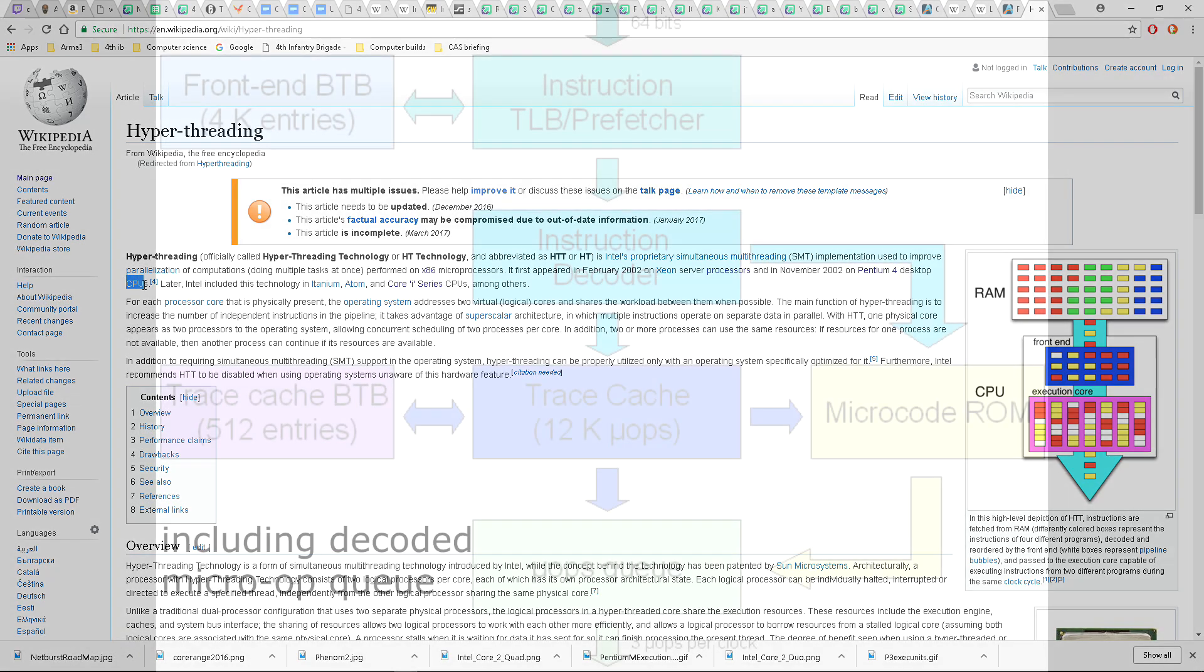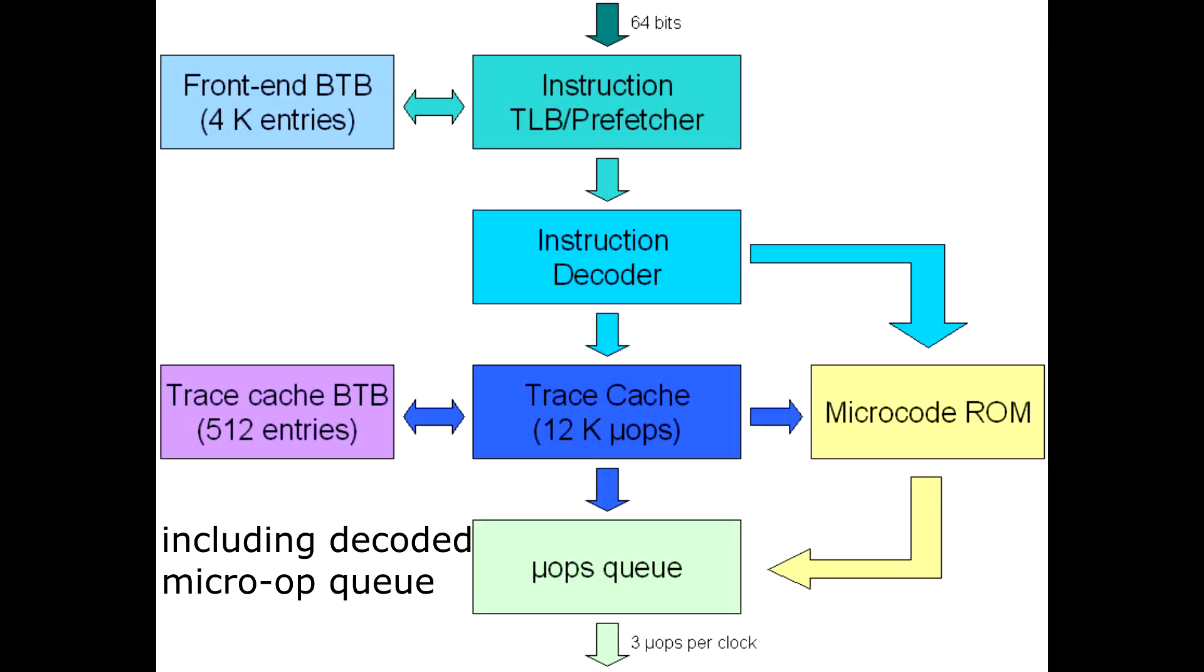There were other technologies introduced, like modern decoded instruction caches, which actually allowed the pipeline length to change depending on if the instruction has been called recently or not. Again, AMD was 15 years behind until Ryzen.